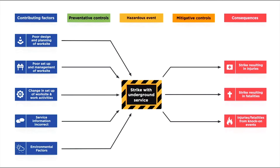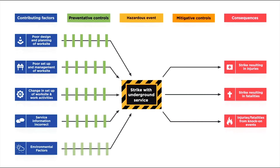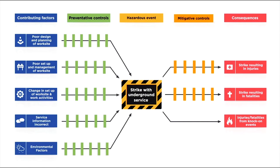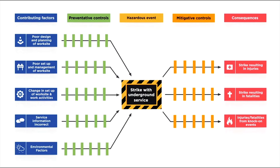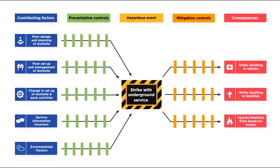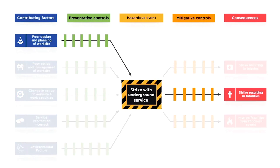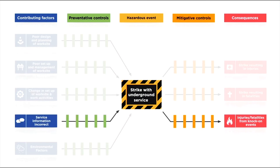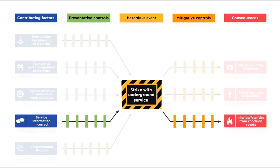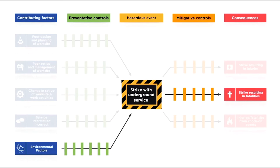Controls are shown on both sides. Preventative controls help prevent a loss of control in the first place. Mitigative controls help reduce the severity of a consequence following a loss of control. The power of a bowtie is that it gives an overview of multiple possible scenarios and a range of controls in a single view, making it easier to understand a risk and how it is best controlled.